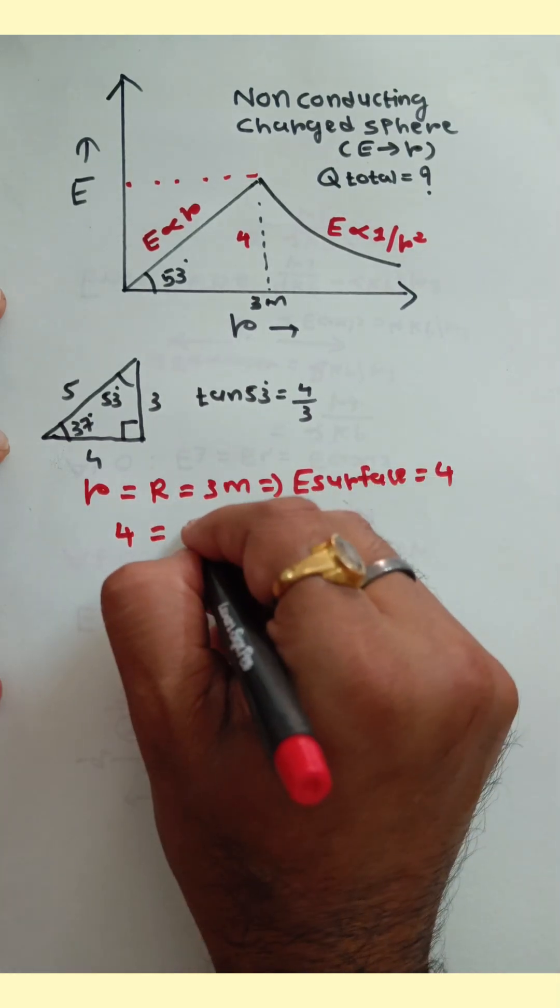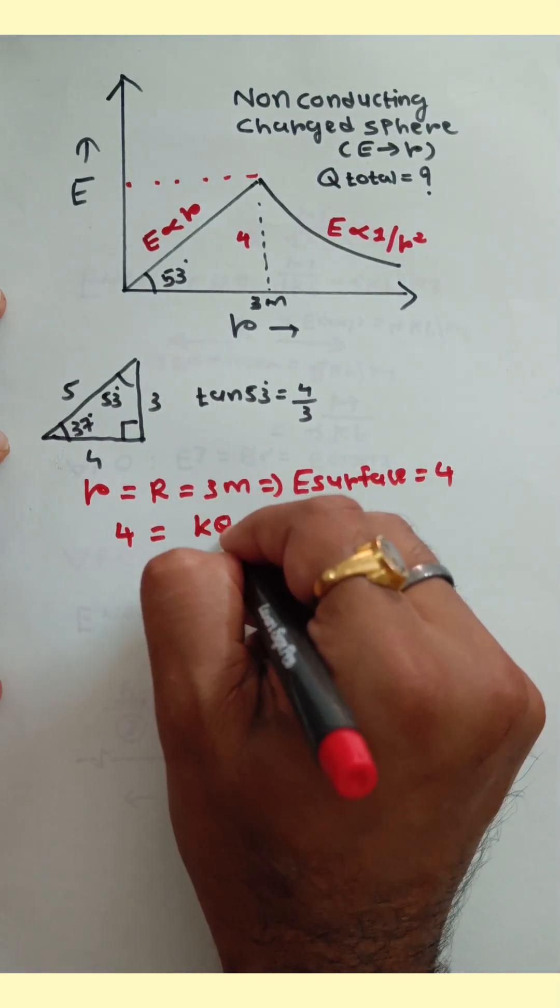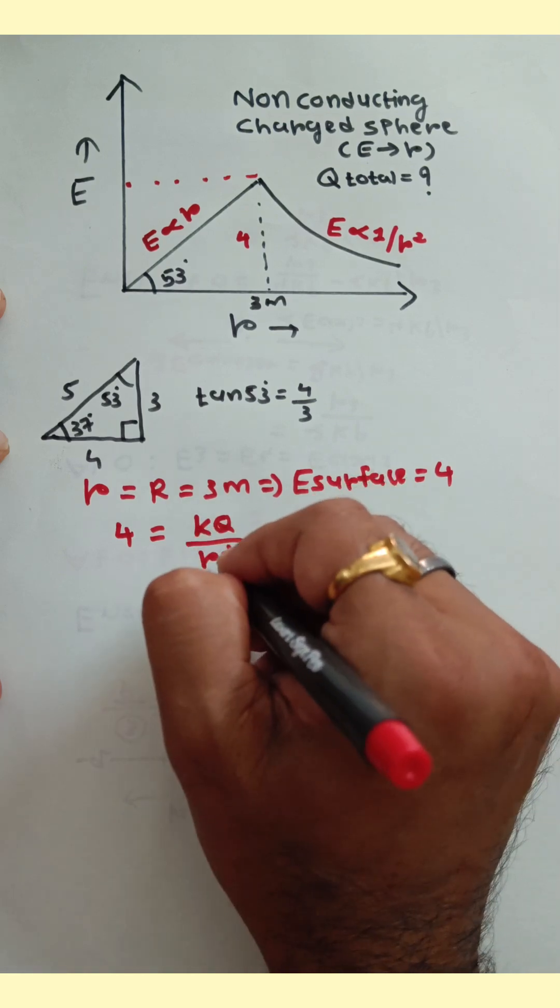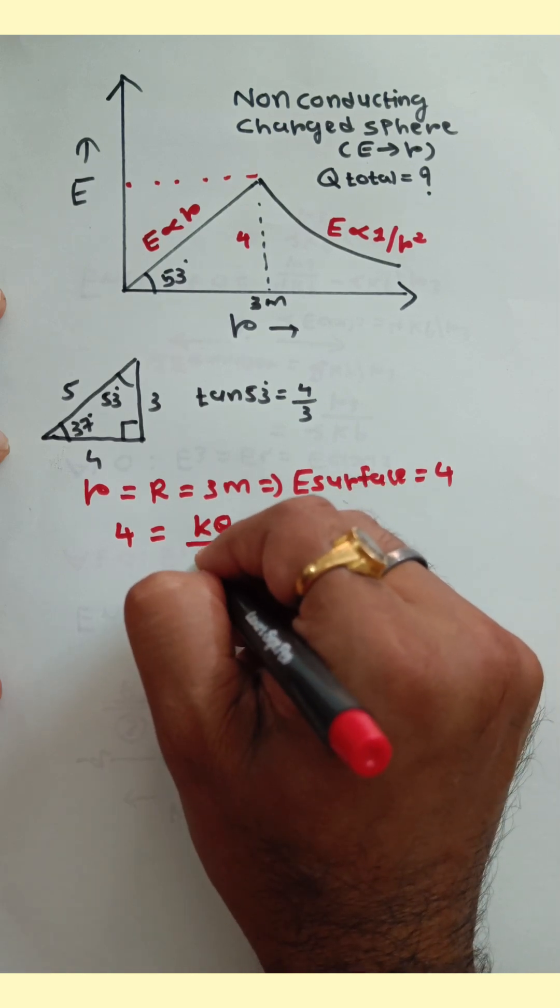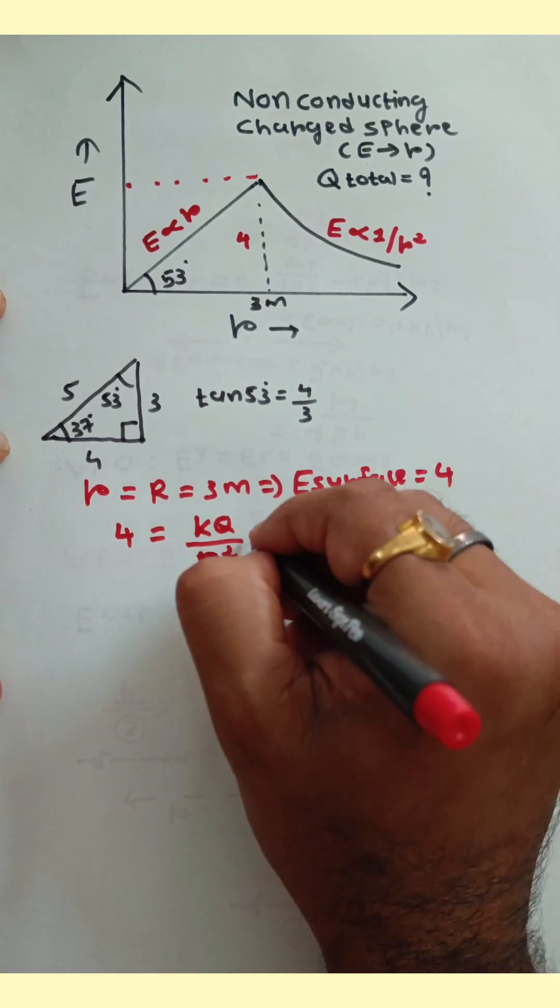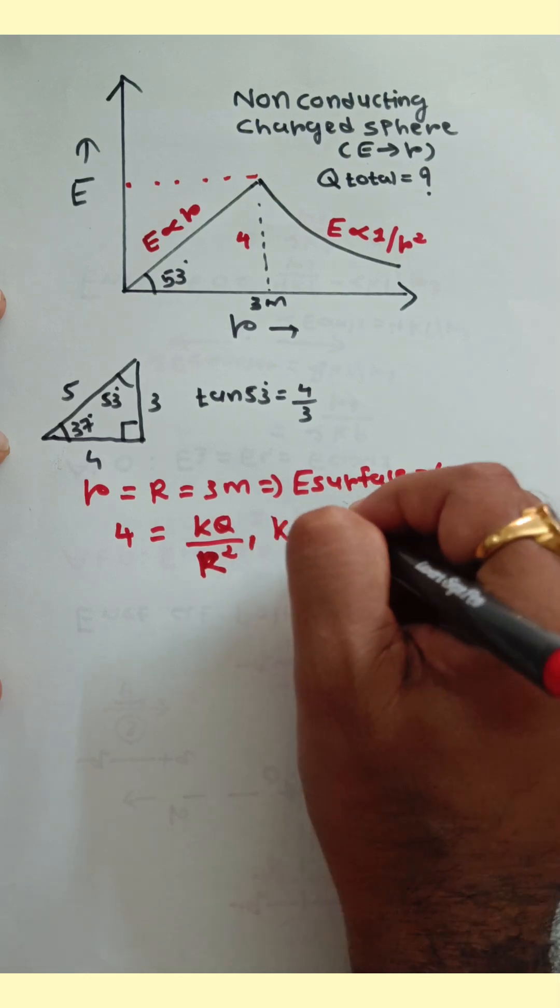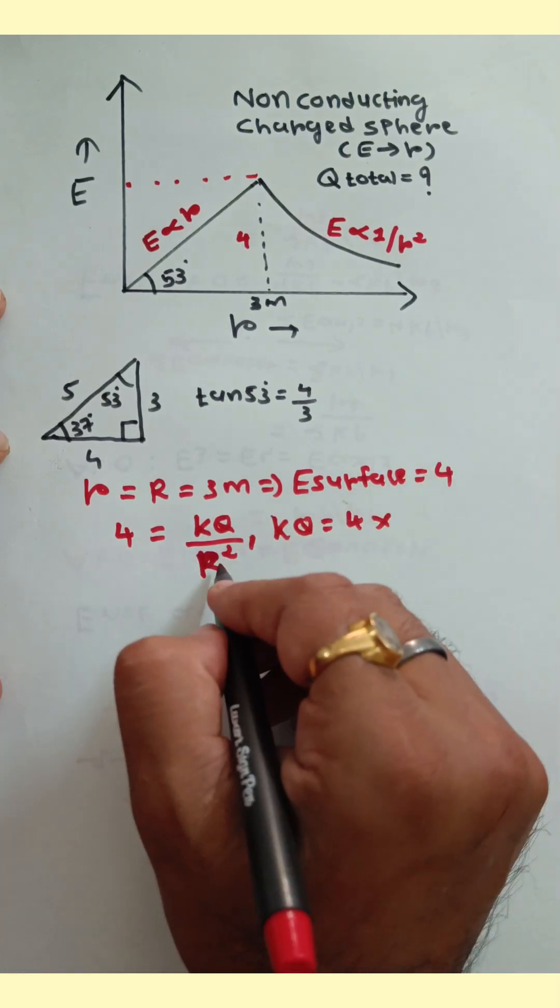But E surface is equal to kq upon r square. So 4 is equal to kq upon r square. But here r is equal to capital R. So kq upon capital R square. So kq is equal to 4 into r square, where r is 3.